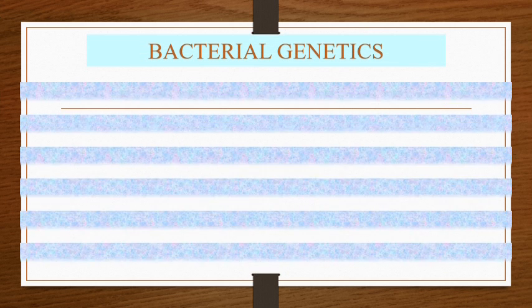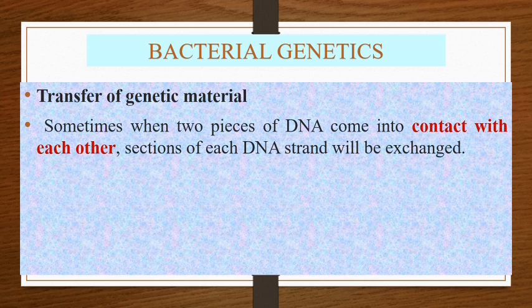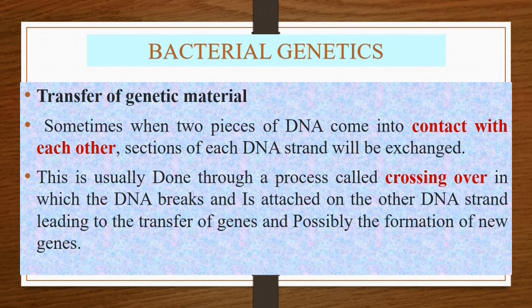Bacterial genetics is also included in sexual reproduction, specifically the transfer of genetic material into recipient cells. When two species of DNA come into contact with each other, sections of each DNA strand can be exchanged. This is usually done through the process called crossing over, in which DNA breaks and attaches to the other DNA strand, leading to the transfer of genes and possibly the formation of new genes.